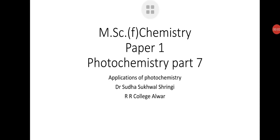Welcome students. Today we'll study M.Sc. final chemistry, Paper 1, Photochemistry Part 7: Applications of Photochemistry. The important applications of photochemistry are discussed as follows. First is the process of photosynthesis which the plants carry out, takes place with the help of sunlight radiation.